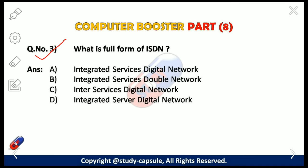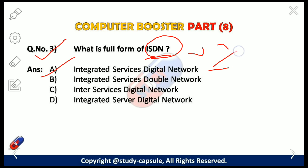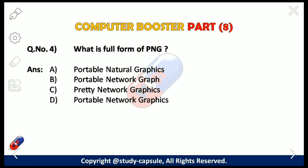Our third question: what is the full form of ISDN? The answer is A — Integrated Service Digital Network. ISDN is a set of communication standards for simultaneous digital transmission of voice, video, data, and other network services over the traditional circuit of the public switched telephone network.